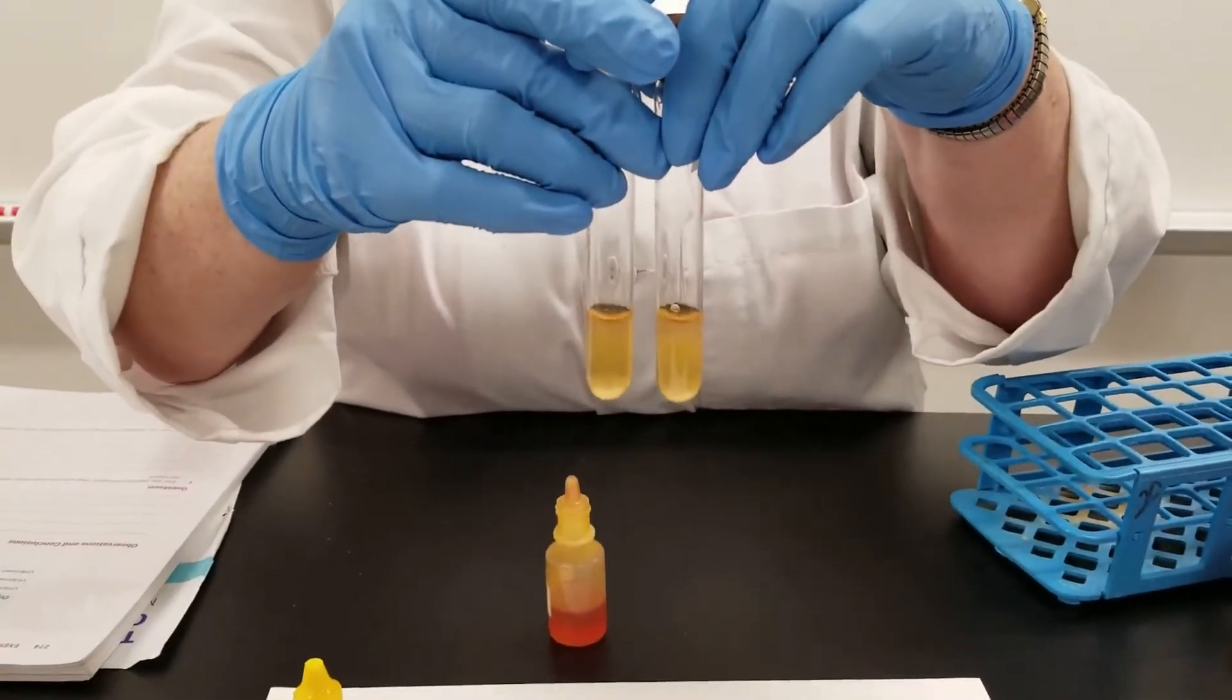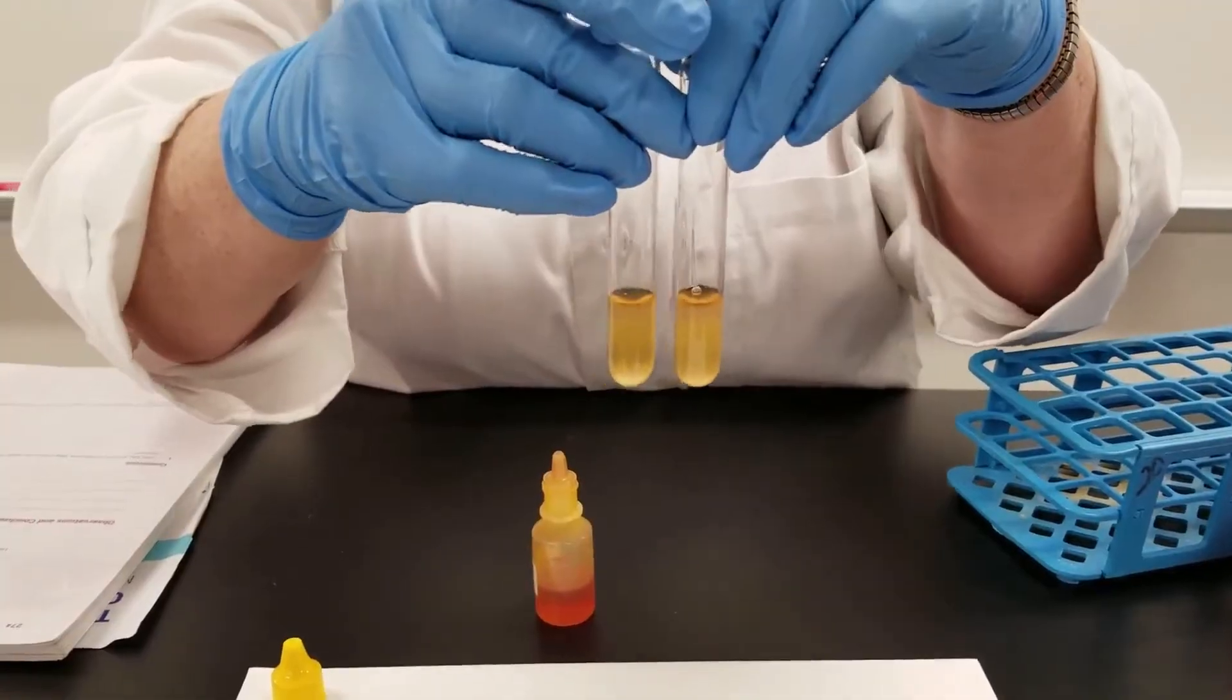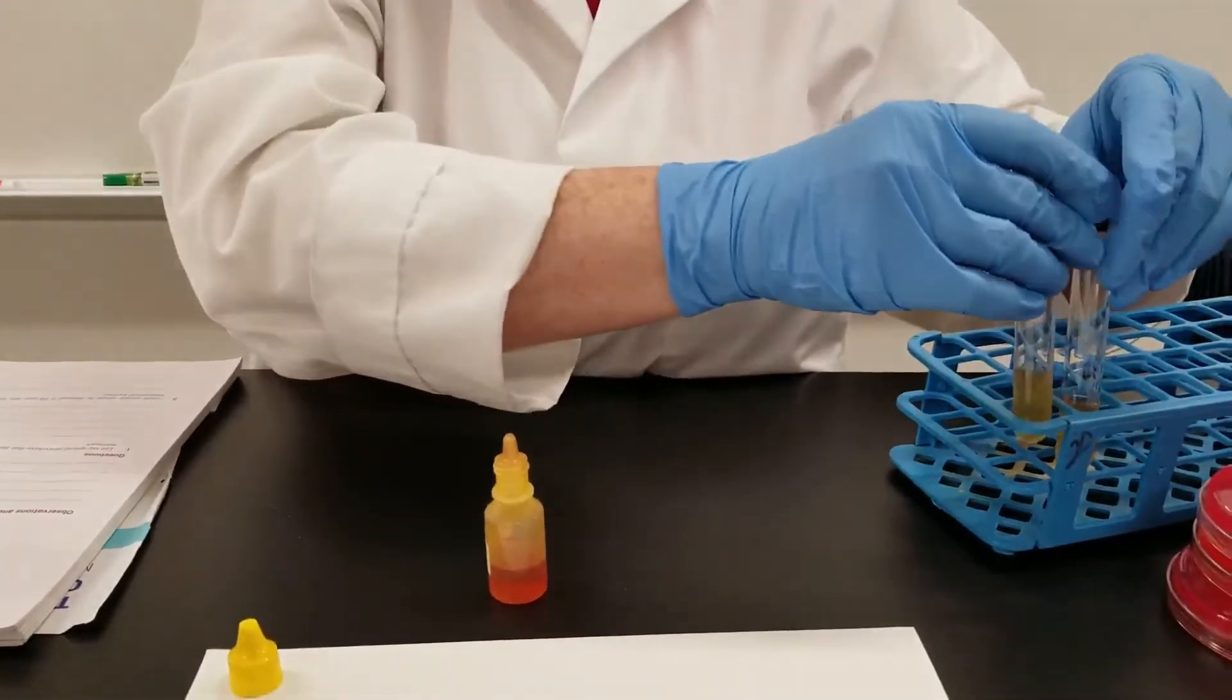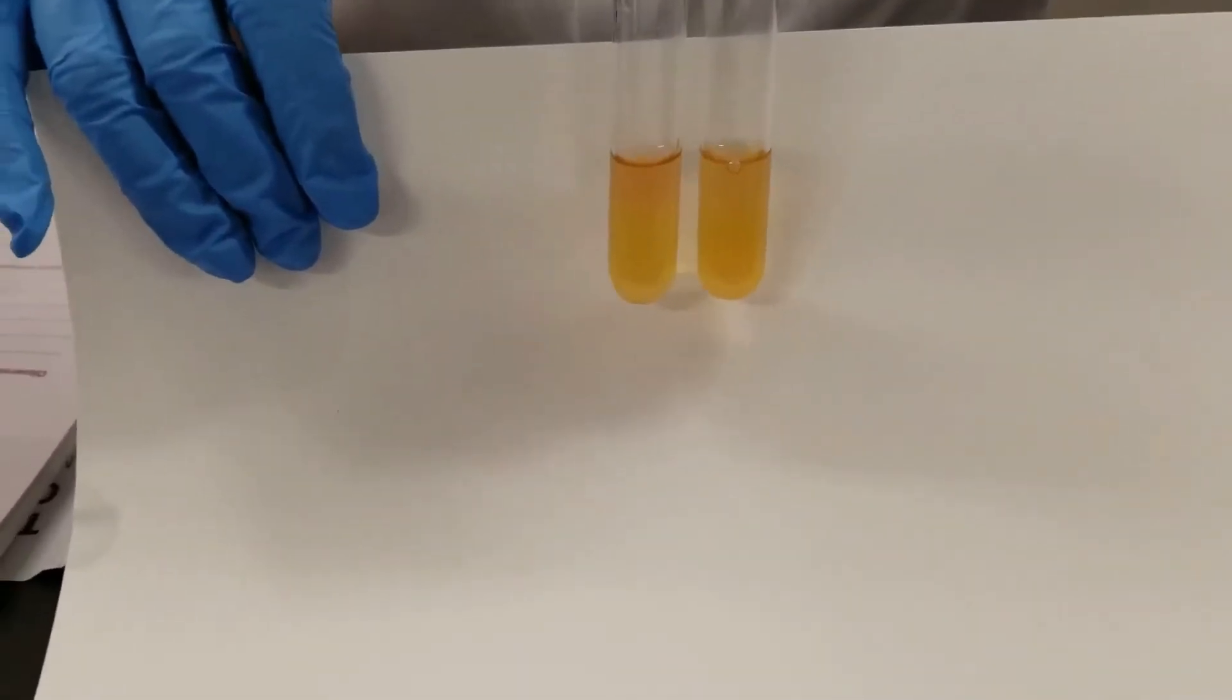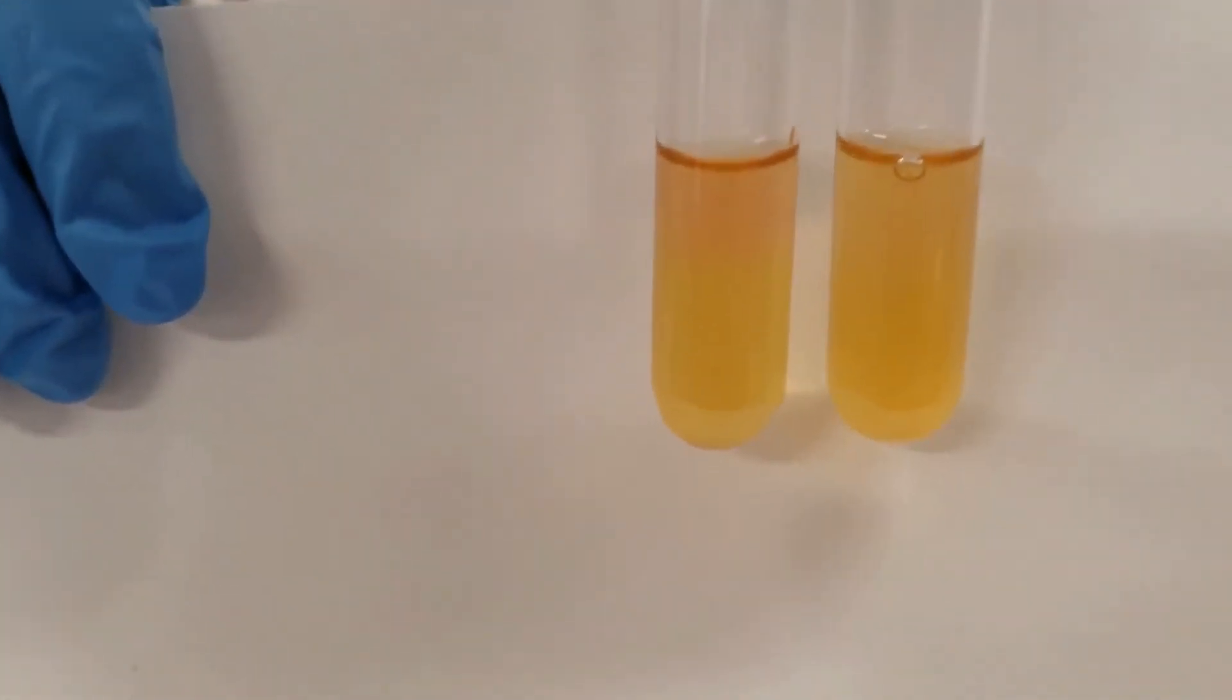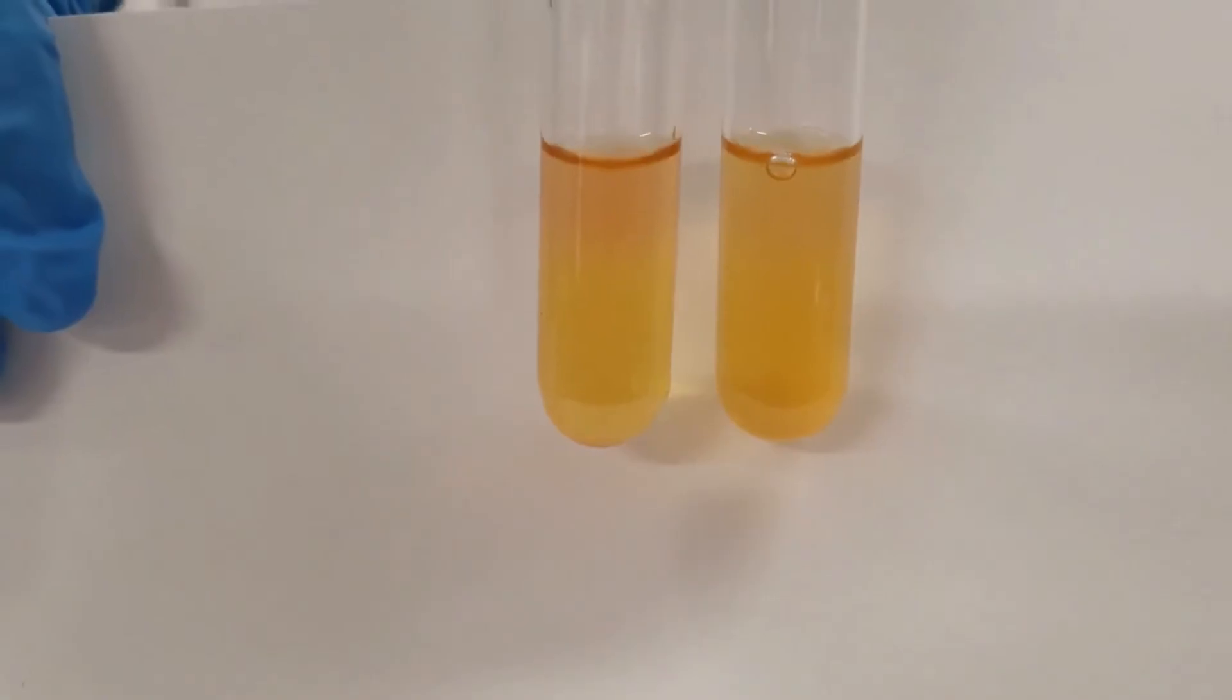Sometimes you may have to add a few more drops or let it sit for a moment. This was the methyl red test after sitting for about five minutes. As you can see, the tube on your left is positive - it has redness to the top layer, versus the tube on the right which has remained yellow and is negative. Red is positive, remaining yellow is negative.